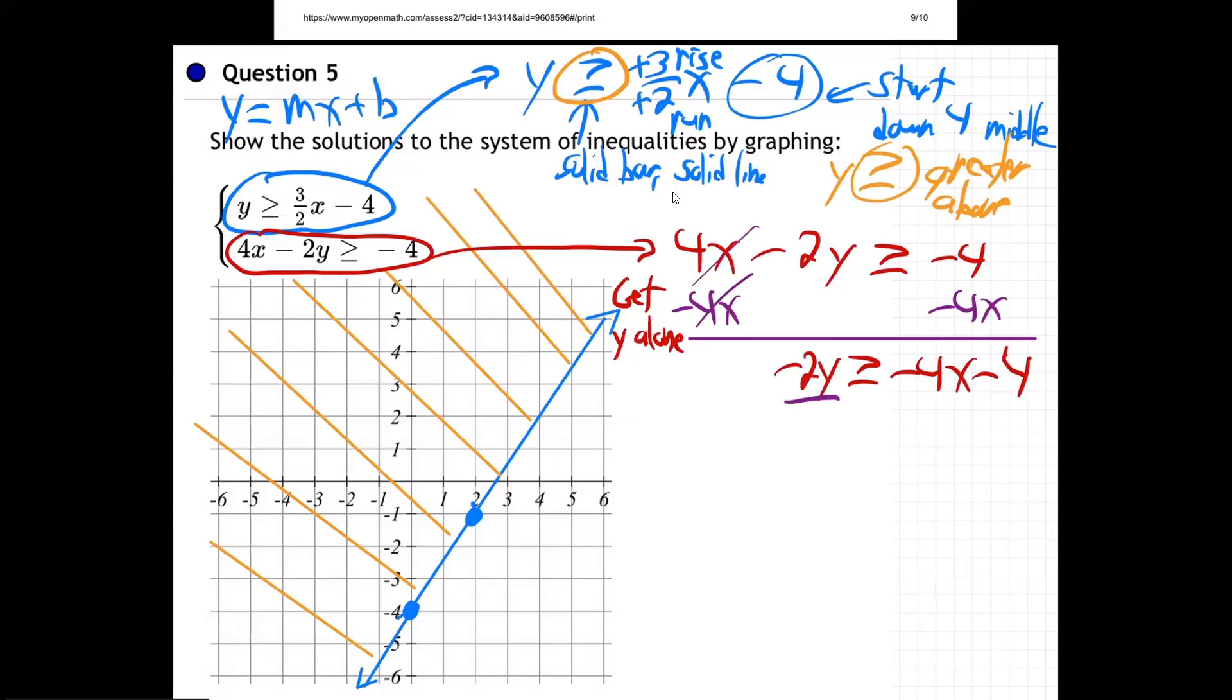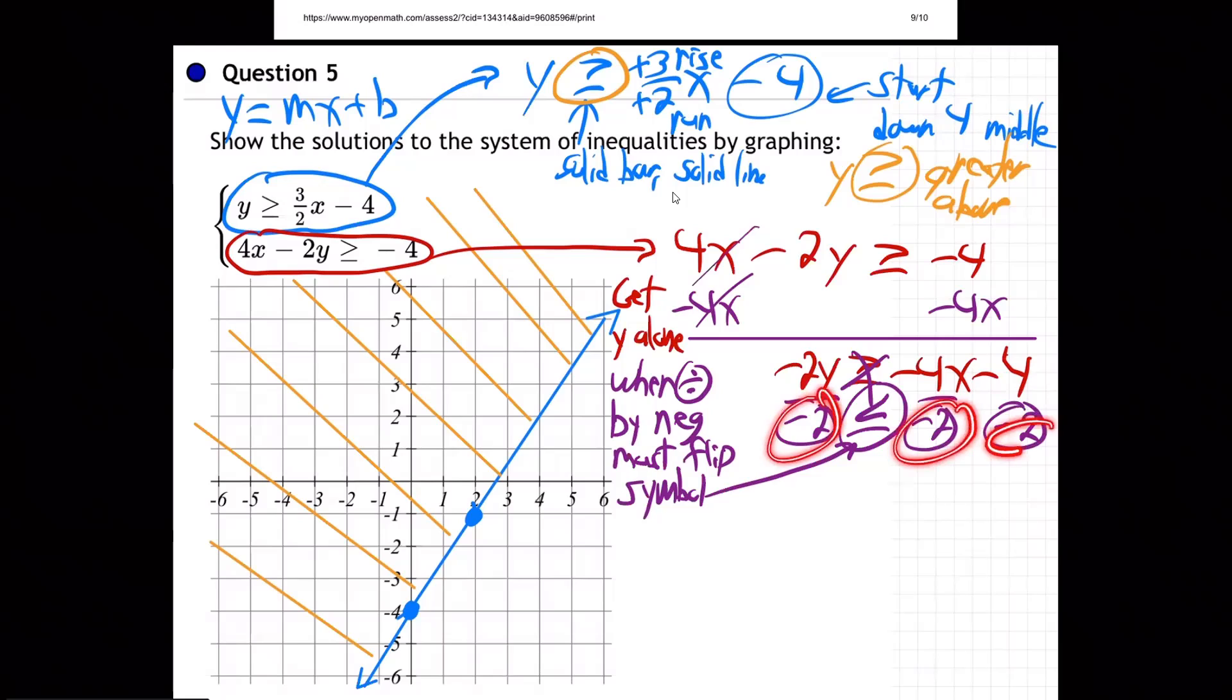Next, we got to divide through by the negative 2. Now, does anybody remember what has to happen right here? Remember, when you divide by a negative, what do you have to do? Switch the sign? Yeah. You must flip the symbol. Yeah. Right there. Right then. You've got to turn the symbol the other way. Does that make sense? When you divide by it. See how I put a negative under the bar?